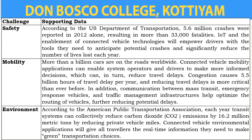Smart roads use the Internet of Things to make driving safer and more efficient. Smart roads combine physical infrastructure such as sensors and solar panels with software infrastructure like artificial intelligence and big data. Smart road technologies are embedded in roads and can improve visibility, generate energy, communicate with autonomous vehicles, monitor road conditions, and many more.